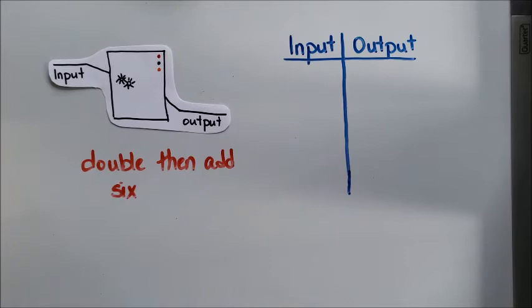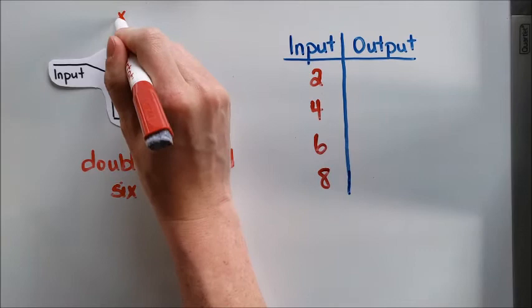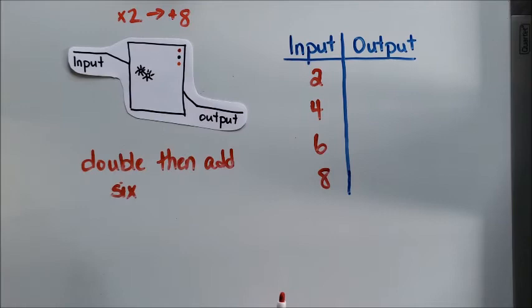So I'm going to have a different set of inputs this time. I'm going to have two, four, six, and eight. So we're going to times by two and then add six. That is going to be my new pattern rule.